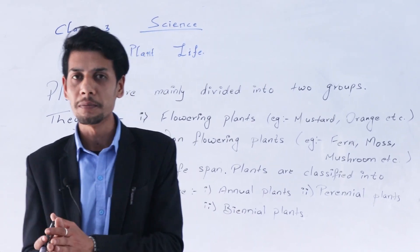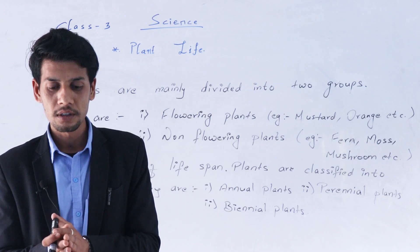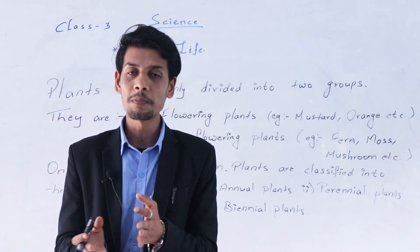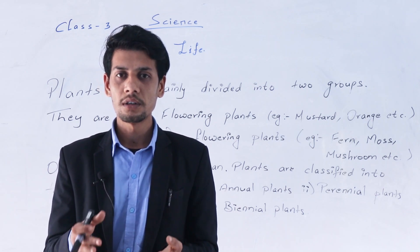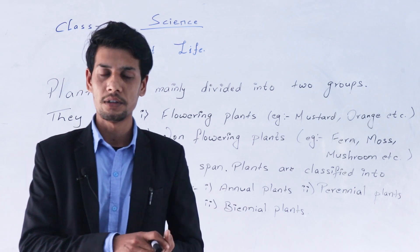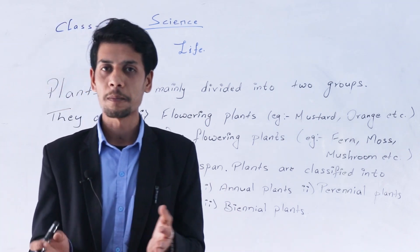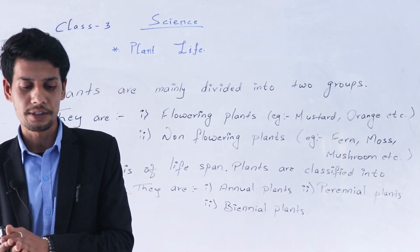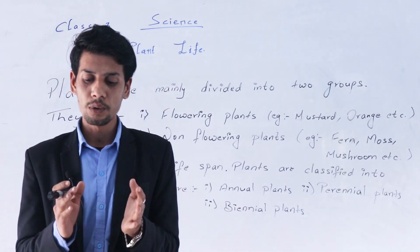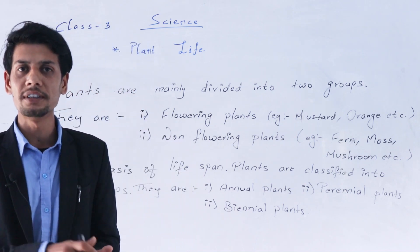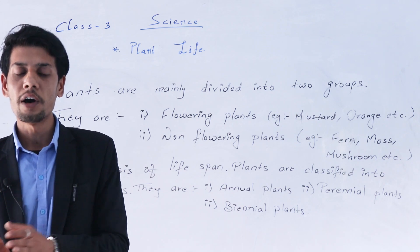Flowering plants are those plants which have flowers in them. The other type is non-flowering plants — plants which do not have flowers in them. These are the two main types of plants.